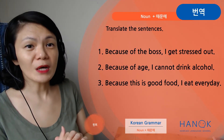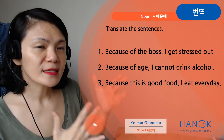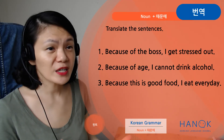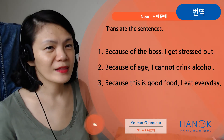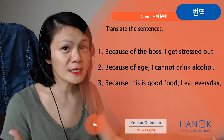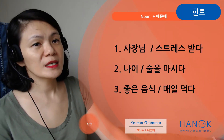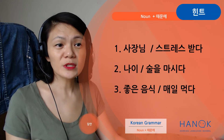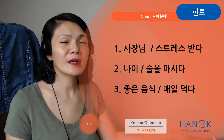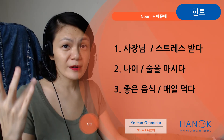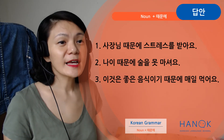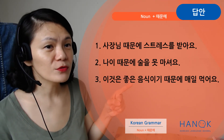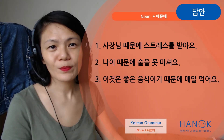지금 우리 연습 합시다. Translate the sentences: 'Because of the boss, I get stressed out' / 'Because of age, I cannot drink alcohol' / 'Because this is good food, I eat it everyday.' One of them uses 이기 때문에, so 주의하세요. 여기 힌트: 사장님, 스트레스 받다 / 나이, 술을 마시다 / 좋은 음식, 매일 먹다. 정답: 사장님 때문에 스트레스를 받아요 / 나이 때문에 술을 못 마셔요 / 이것은 좋은 음식이기 때문에 매일 먹어요. 여기까지입니다, noun plus 때문에. 감사합니다!